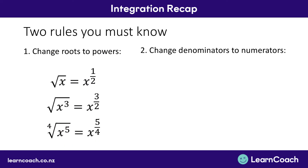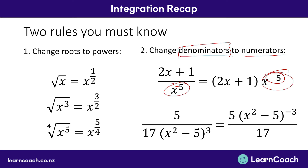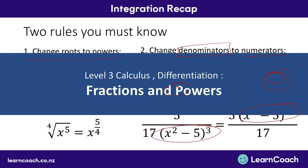The second rule is that we need to change denominators to numerators by making the power negative. So x to the power of 5 on the bottom of a fraction becomes x to the power of negative 5 on the top. We can also do this with more complicated powers — for example, x squared minus 5 to the power of 3 in the denominator becomes x squared minus 5 to the power of negative 3 in the numerator. Do this every time before you integrate. For a full explanation, go to the level 3 calculus differentiation video called Fractions and Powers.